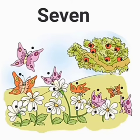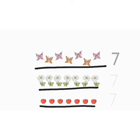See the picture and tell me how many butterflies, fruits and flowers. 7 butterflies, 7 fruits and 7 flowers.